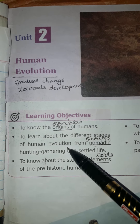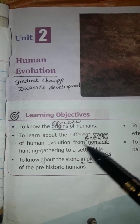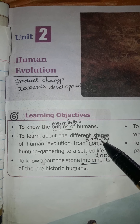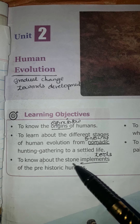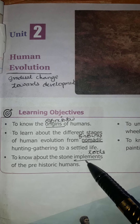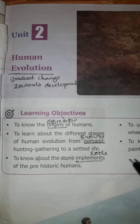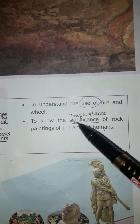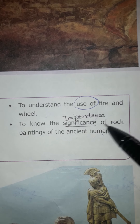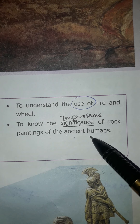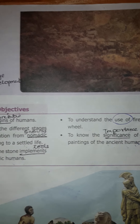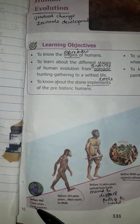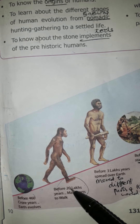To know about the different stages of human evolution, from nomadic hunting and gathering to a settled life — nomadic means not settled. To know about the stone implements of prehistoric humans — implements means tools. To understand the use of fire and the wheel, and to know the importance of rock paintings of ancient humans.